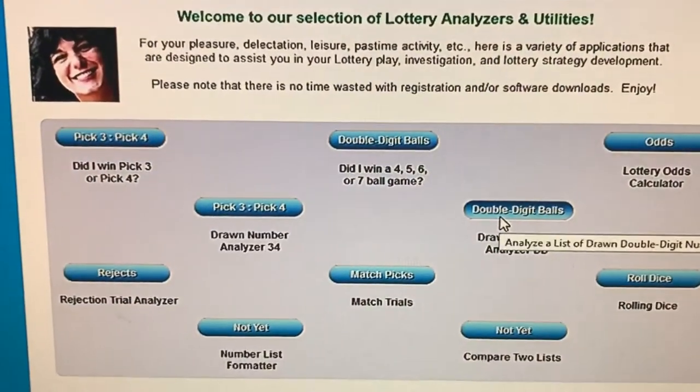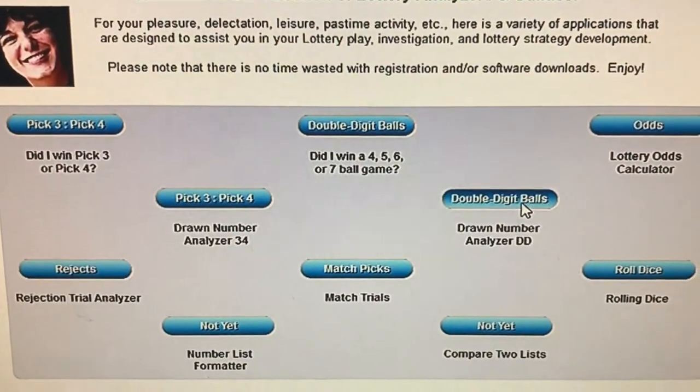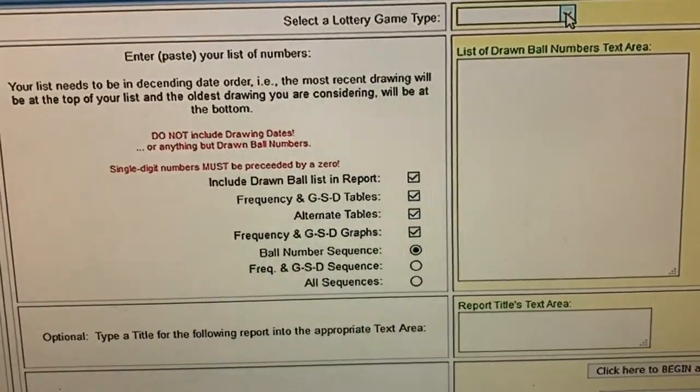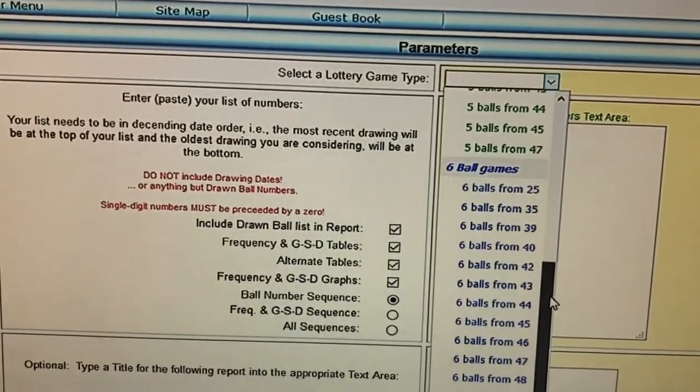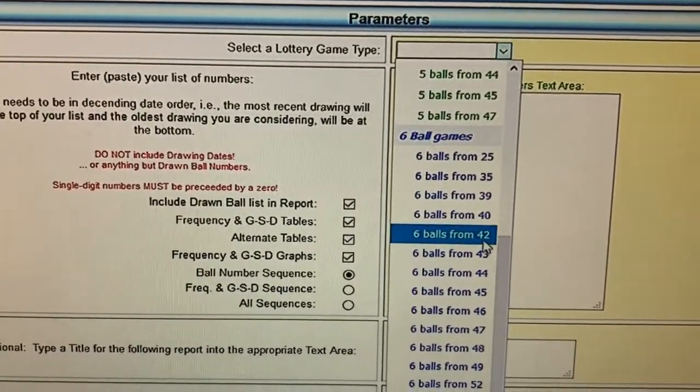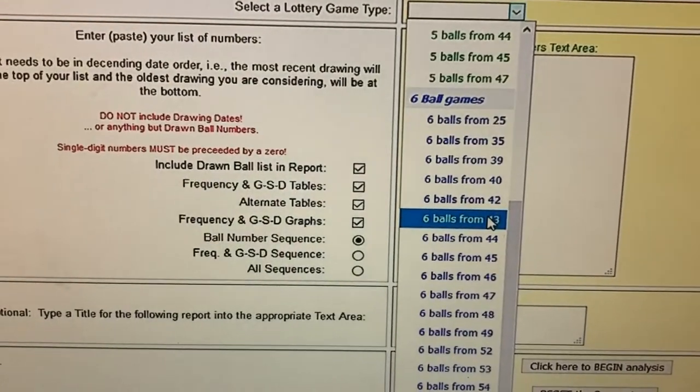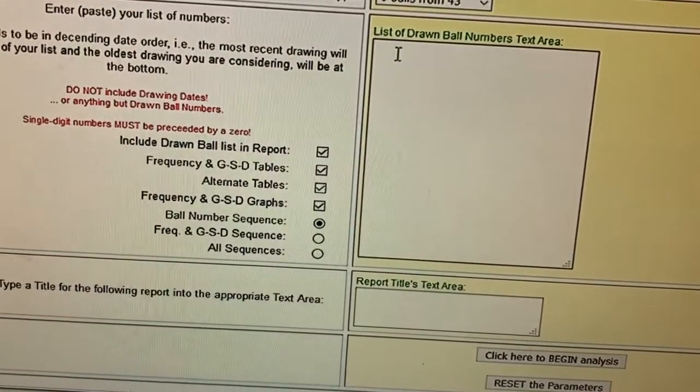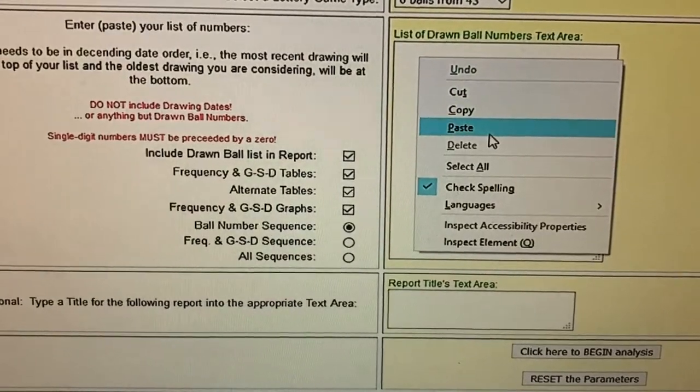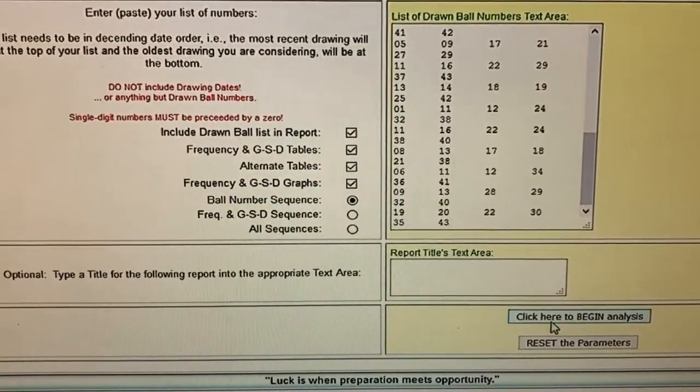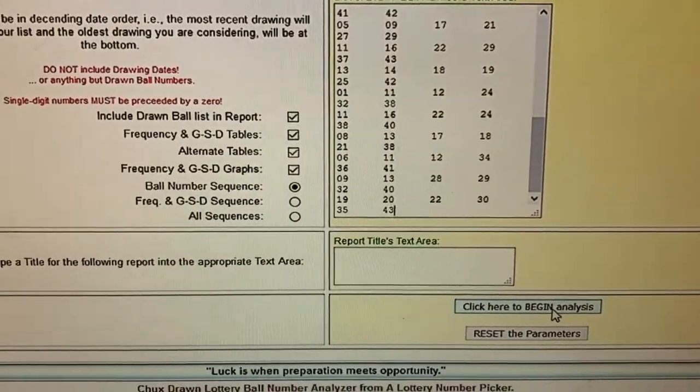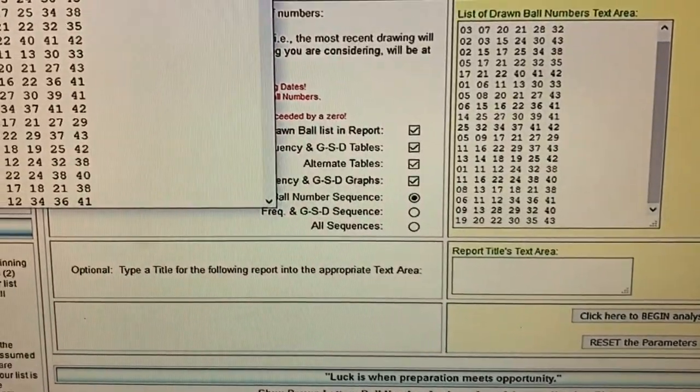Once there, select double digit balls, select a lottery game, scroll down until you find six balls from 43, right, lotto6. Paste your numbers here. It'll be scrambled like this, then click here to begin analysis.